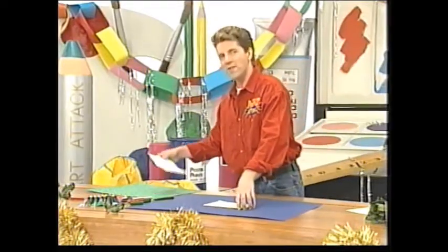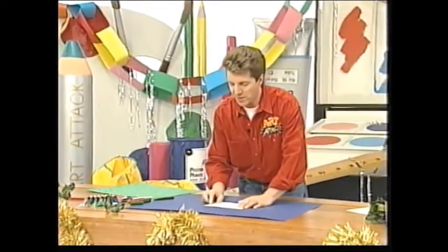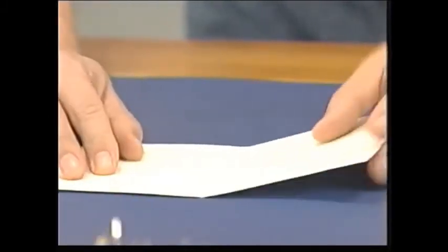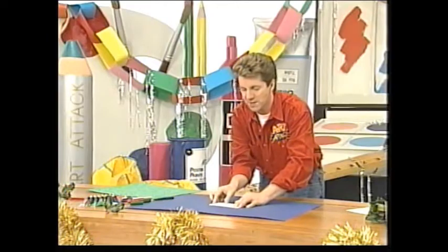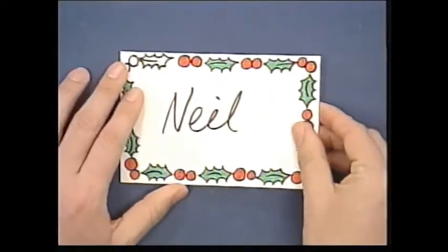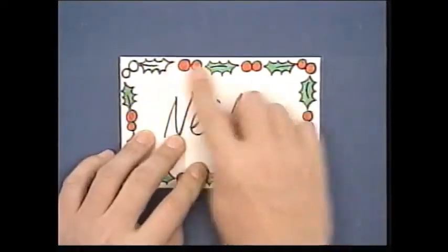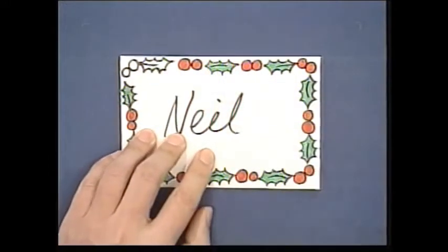And you could try this. Take an ordinary piece of white card or thick paper, cut a rectangle, fold it in half, and make some place cards for your Christmas dinner table by writing your guests' names on the front and just creating a border of holly around the outside. And look at that.